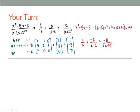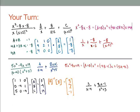Ready for your next one? Pause the video and check against the checkpoints. This problem is very straightforward. Make sure your answer is 3 over (x minus 4) plus (2x minus 1) over (x squared plus 5).